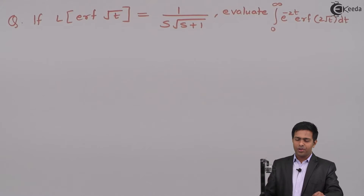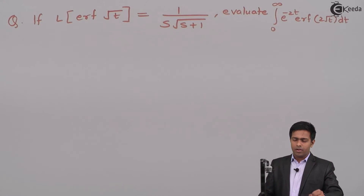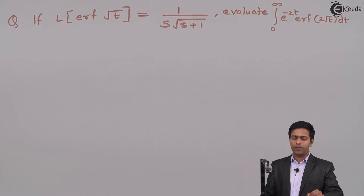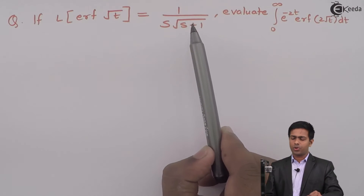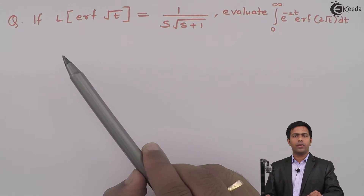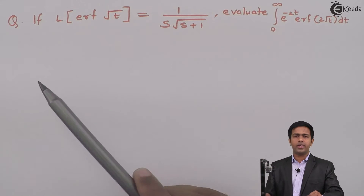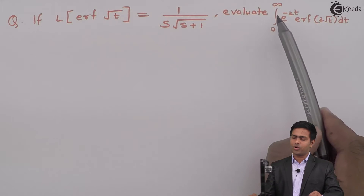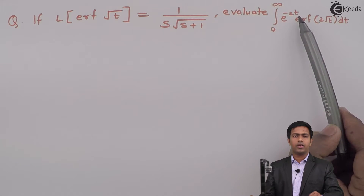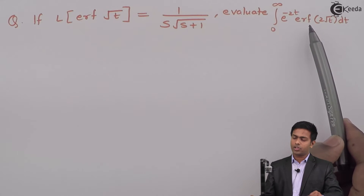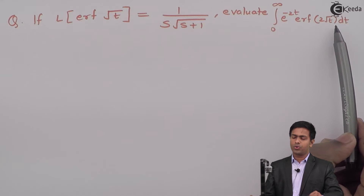Hello friends, so here Laplace of error function of root t is given as 1 upon s root of s plus 1, and we have to evaluate integration 0 to infinity e raised to minus 2t error function of 2 root t dt.